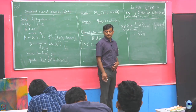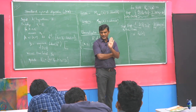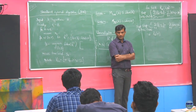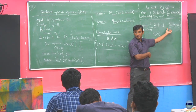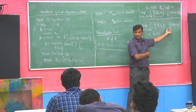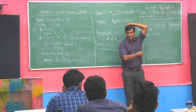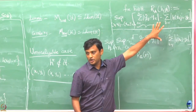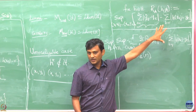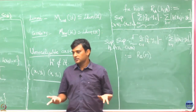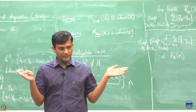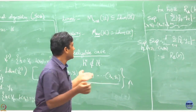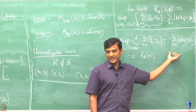Suppose the realizability condition holds — what would this term be? It would be 0, because there exists H-star which always makes a correct prediction. But now I have removed that condition, so this term need not be necessarily 0.